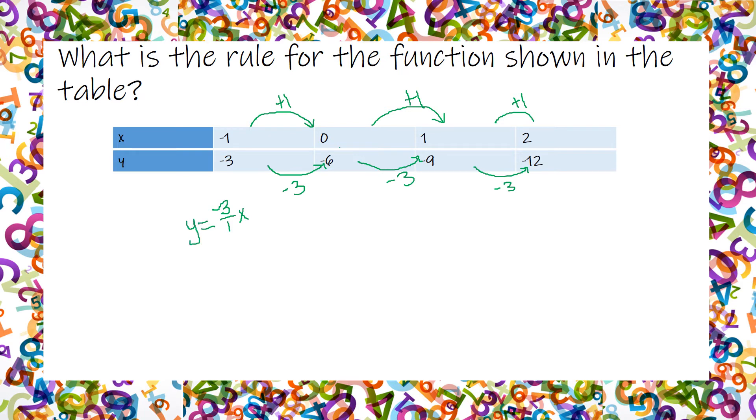And then, we have our y-intercept here that is minus 6. So you could write it y equals the slope, negative 3x, and then our y-intercept. You could also see it written as f of x equals negative 3x minus 6.